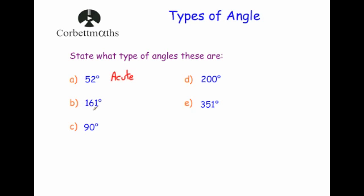Next, 161 degrees. Well it's bigger than 90 but it's less than 180 degrees, so it's going to be an obtuse angle. Then C, 90 degrees — well 90 degrees is a right angle.